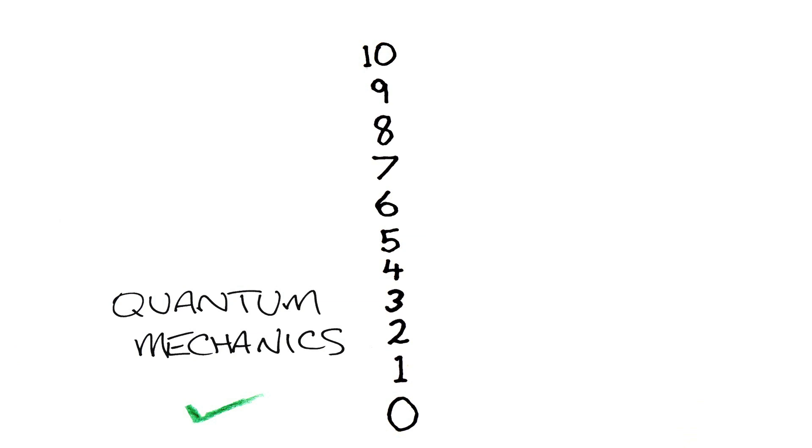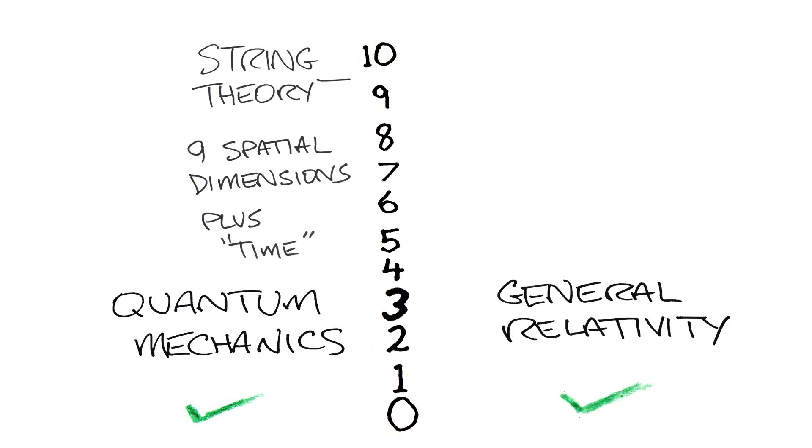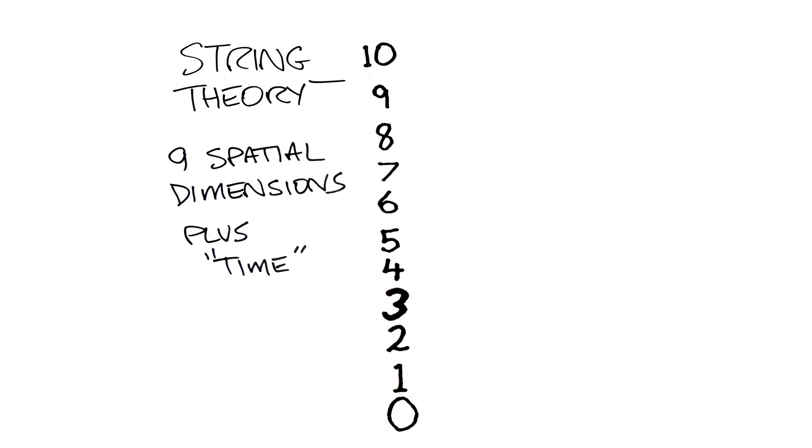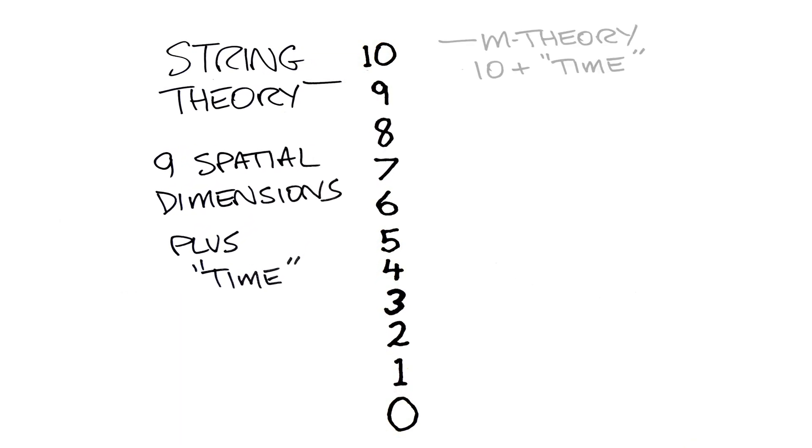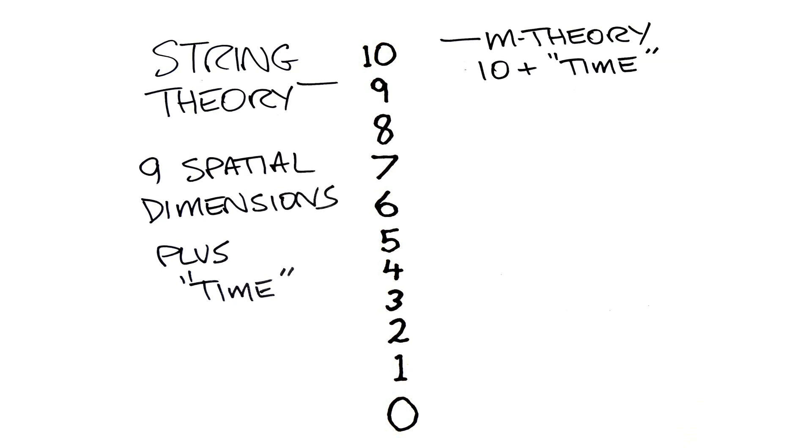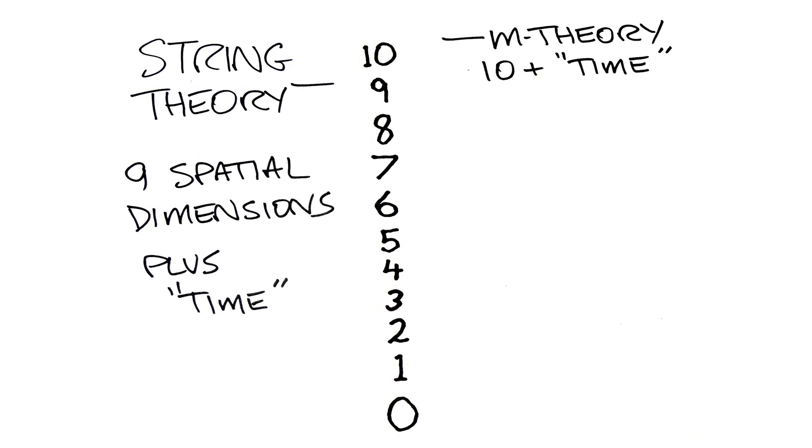String theory's goal is to reconcile quantum mechanics and general relativity. String theory does that in nine spatial dimensions plus something we call time, which is not a spatial dimension, while M-theory achieves the same goal using ten spatial dimensions plus time.